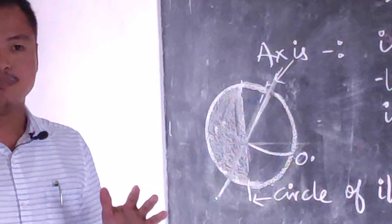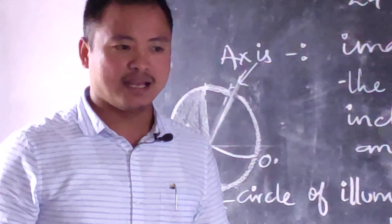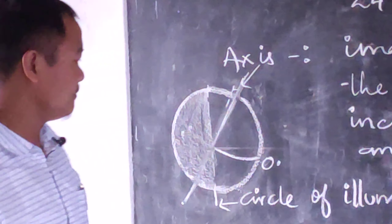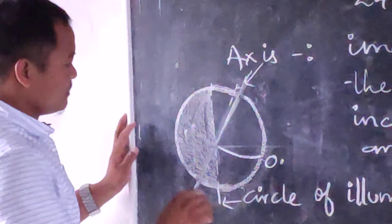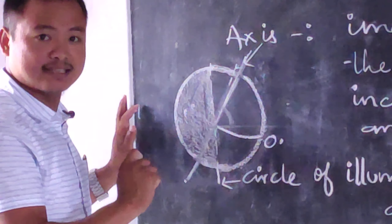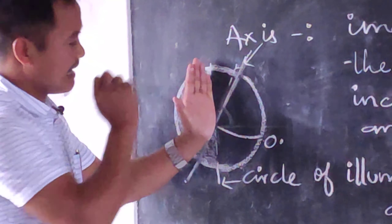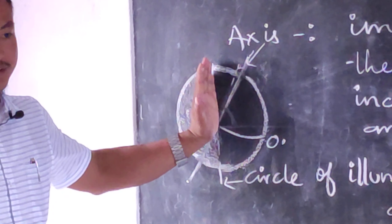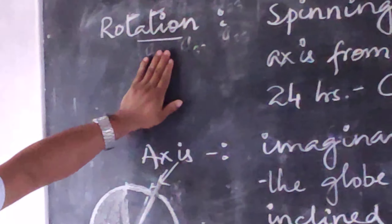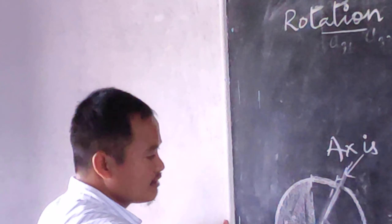The orbital plane is a plane formed by the orbit — a plane formed in between the orbital lines of the earth. The angle formed at the orbital line is 66 and a half degrees, while the angle formed to its vertical plane is 23 and a half degrees.